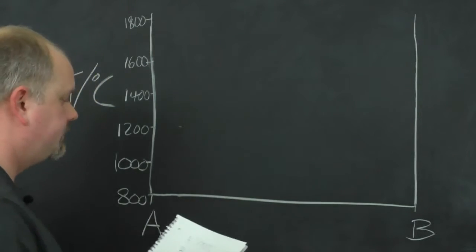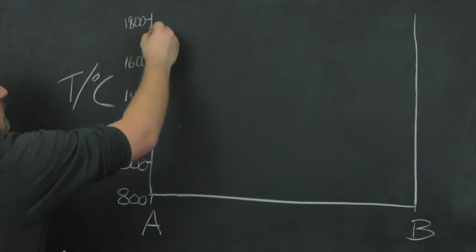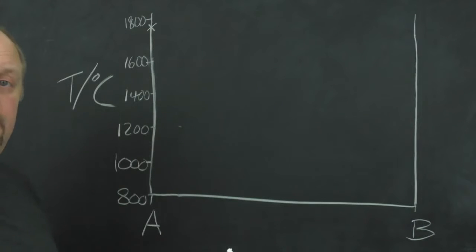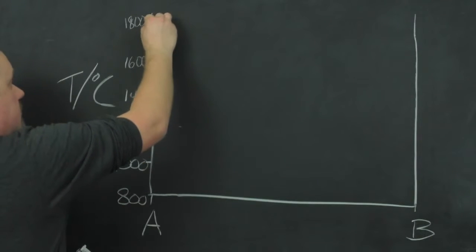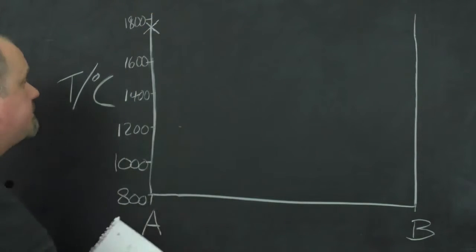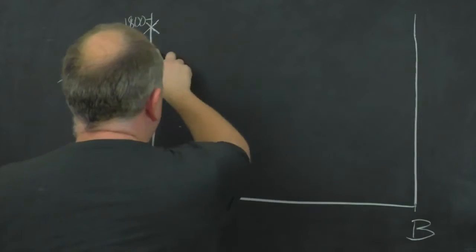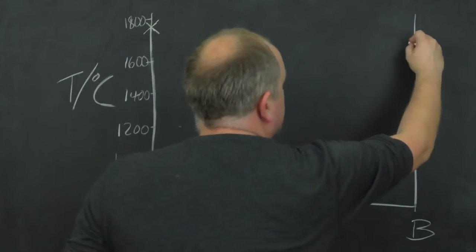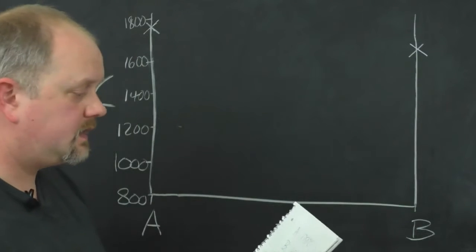So let's have a go at writing that up. We've got A, which we know melts here about 1750, do that a bit bigger, and B, our component over here, melts around about 1650.